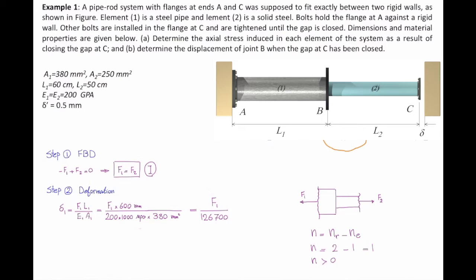Let's do the same for the second deformation. Delta 2 is FL over EA. F2 is what we are looking for. Length of the second element is 500 millimeters. Modulus of elasticity is the same. Area is 250 squared millimeters. If I plug the values, that gives me F2 divided by 100,000.